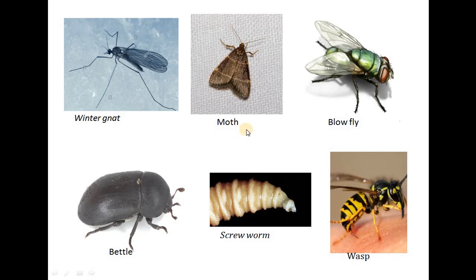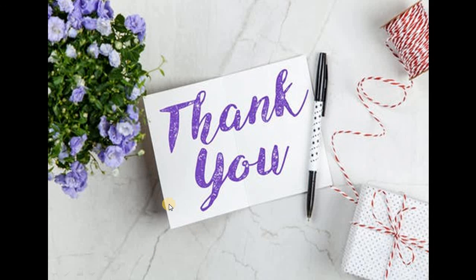Examples of forensic entomology organisms include winter gnats, moths, blow flies, screwworms, wasps and beetles. Thank you.